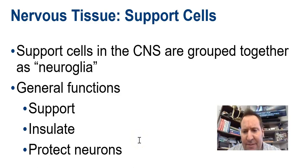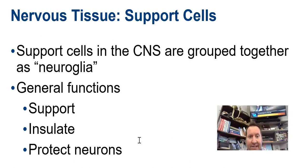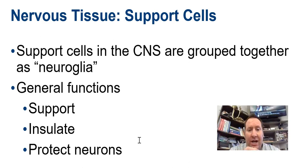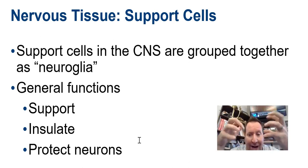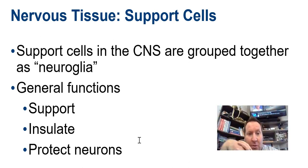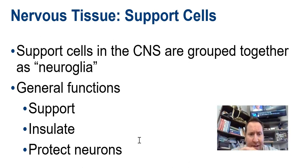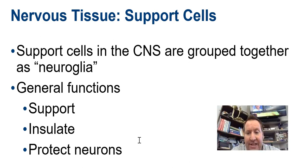Alright, so now that we've talked about the brain, we've broken down the nervous system into the central nervous system and the peripheral nervous system, and then we broke down that peripheral nervous system even further. We're now going to dig into things at the cellular level, and we're going to start taking a look at nervous tissue.